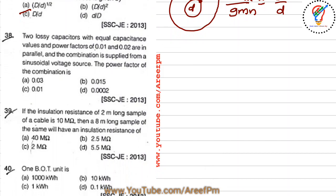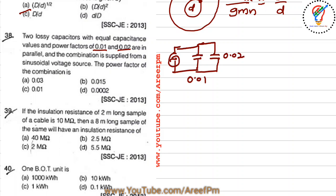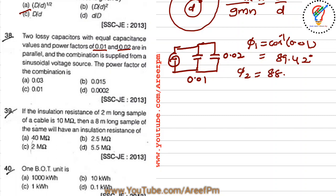Next question: two lossy capacitors with equal capacitance values and power factors of 0.01 and 0.02 are connected in parallel and supplied from a sinusoidal voltage source. What is the power factor of the combination? We find phi_1 = cos⁻¹(0.01) = 89.42° and phi_2 = cos⁻¹(0.02) = 88.85°.